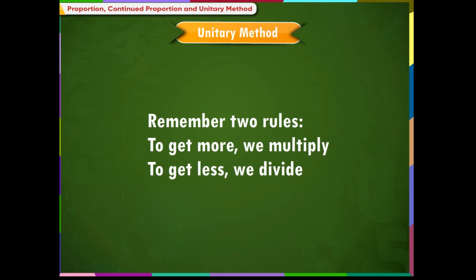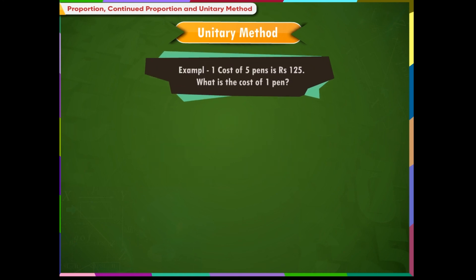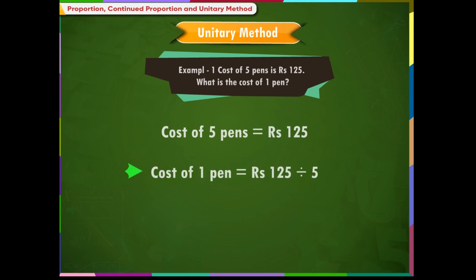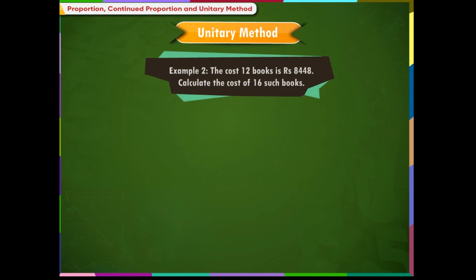Let us understand this method with some examples. Example 1: The cost of five pens is rupees 125. What is the cost of one pen? Cost of one pen = rupees 125 ÷ 5 = rupees 25.